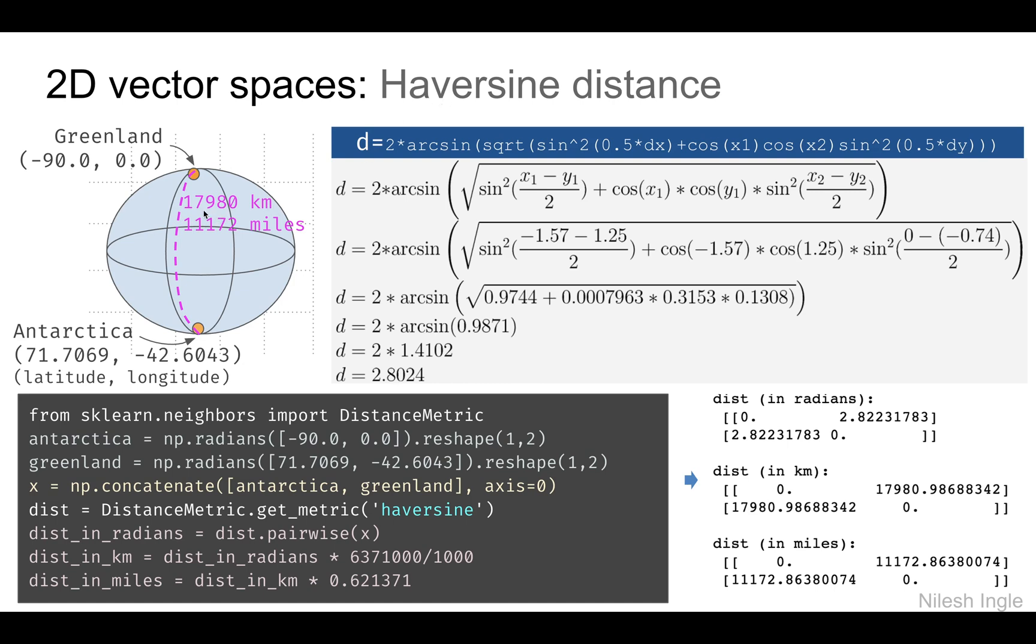It is given by this relation shown here in blue, as well as the equation shown below. When we calculate this distance, we get output in radians which is 2.8024 radians. When we convert it to kilometers or miles, we get around 18,000 kilometers or around 11,000 miles.